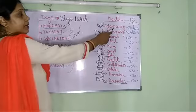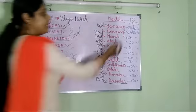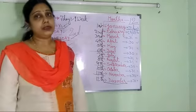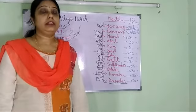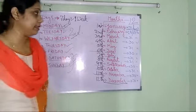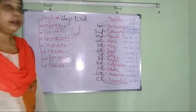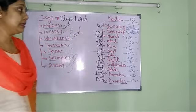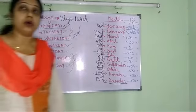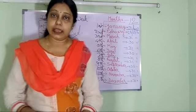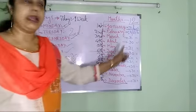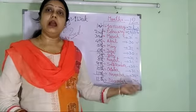Here I have written how many days are there in each month. January has 31 days. February has either 28 or 29 days — whenever it is a leap year, February will have 29 days; otherwise, February will have 28 days. March has 31 days, April 30 days, May 31 days, June 30 days, July 31 days, August 31 days, September 30 days, October 31 days, November 30 days, and December 31 days. You have to learn how many months have 31 days and how many have 30 days, because the question may be framed from here.